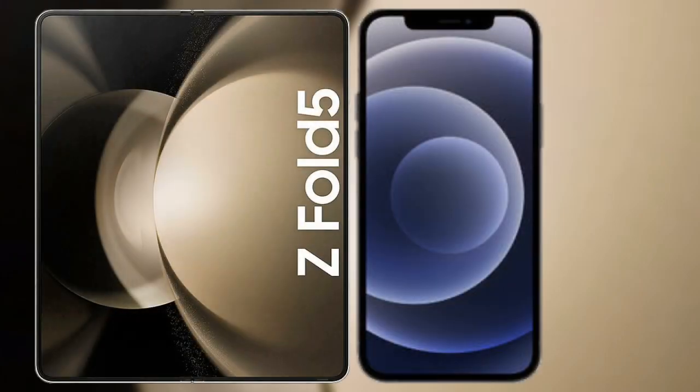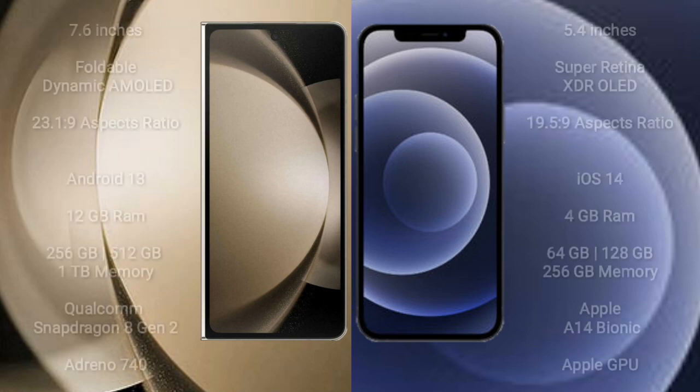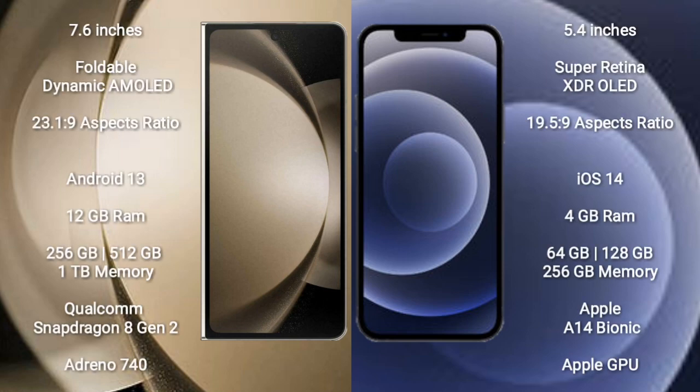I will compare the new Samsung Galaxy Z Fold 5 with iPhone 12 mini. Samsung Galaxy Z Fold 5 comes with a 7.6-inch foldable Dynamic AMOLED display with an aspect ratio of 23:1.9. iPhone 12 mini has a 5.4-inch Super Retina XDR OLED display with an aspect ratio of 19.5:9.